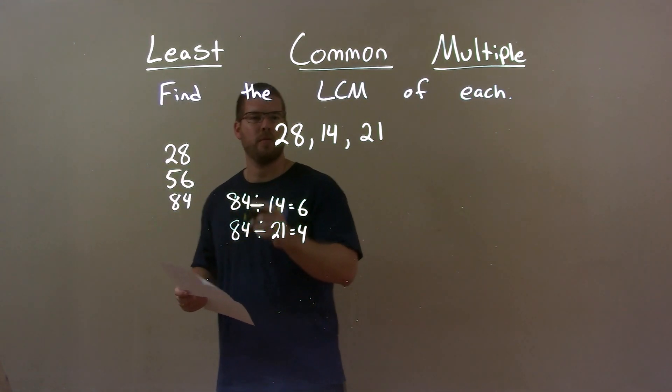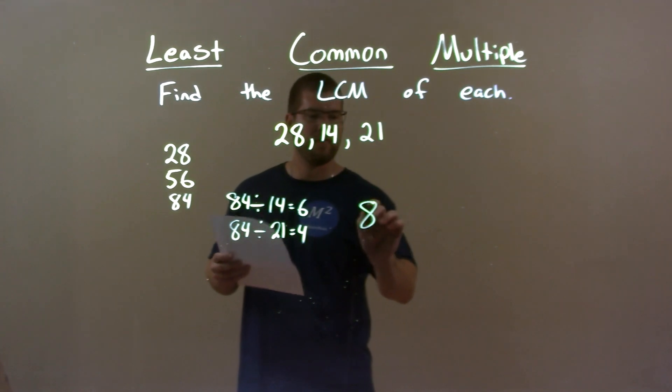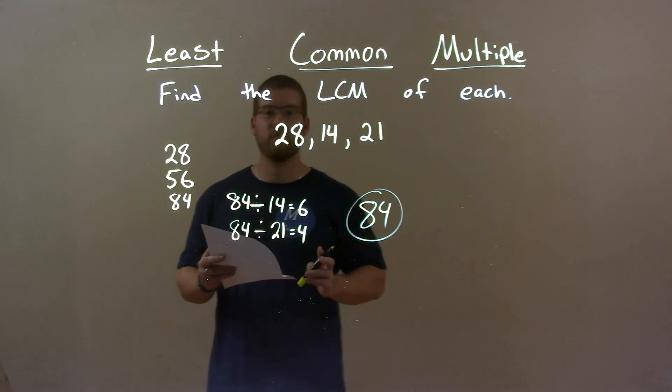So, 84 is the first number, first multiple of 28, that's divisible by the other two, so my final answer here is just 84.